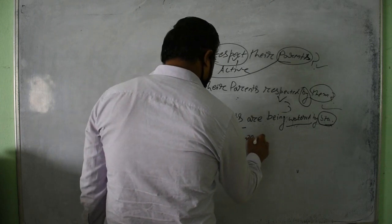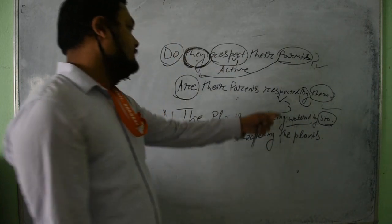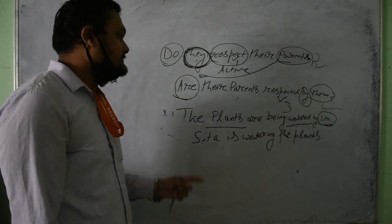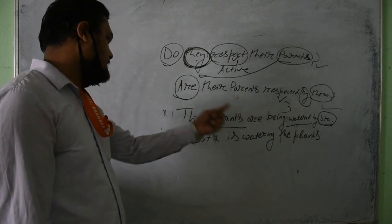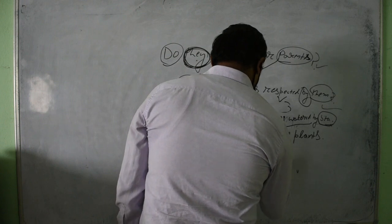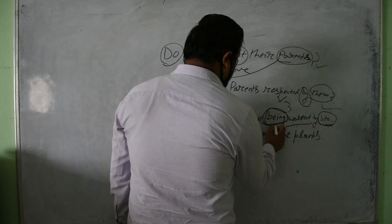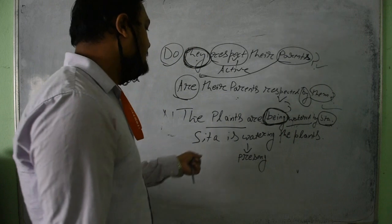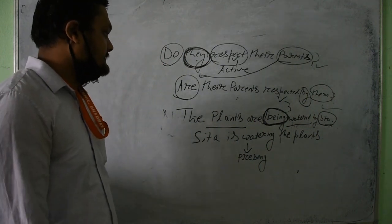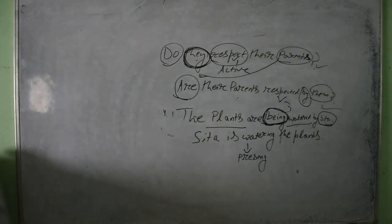The active form is: 'Sita is watering the plants.' The doer — Sita — comes back to the beginning. In the passive voice, the object came to the front; now in active voice, Sita is the subject again. Since it is in present continuous tense, 'being' was used in the passive. 'Sita is watering the plants' — this is the active form. I hope there is no doubt — you can ask me questions or comment in the comment section if you have any.